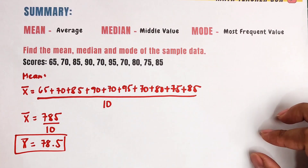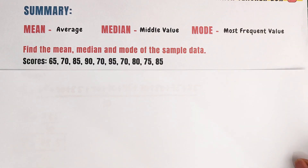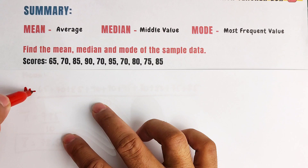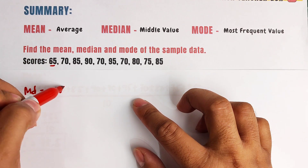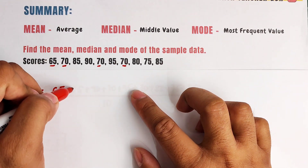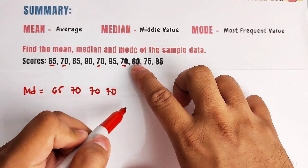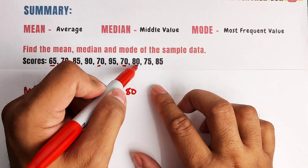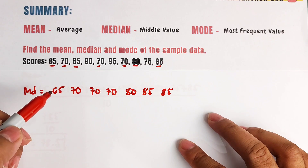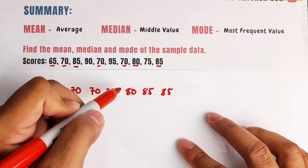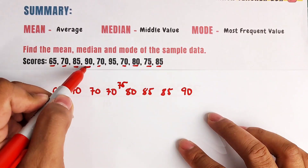Now let's find the median. We arrange in ascending order: 65, 70, 70, 70, 75, 80, 85, 85, 90, 95. Since this is an even number of values, we eliminate from the outside in to find the two middle numbers, which are 75 and 80. To get the median, we add them: 75 plus 80 over 2 equals 155 over 2.